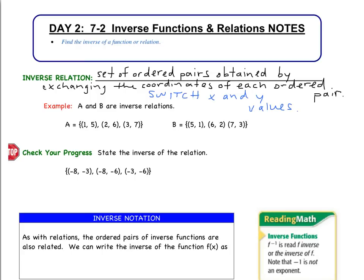Looking at this first example, A and B represent relations and they happen to be inverse relations. In set A we have the ordered pair (1, 5), and set B needs an ordered pair (5, 1) — which we have. Set A also has (2, 6), so set B needs (6, 2), which is the second ordered pair. Finally, set A has (3, 7), so set B needs (7, 3), which it does. All x and y values from set A switched positions in set B, so they are inverses.